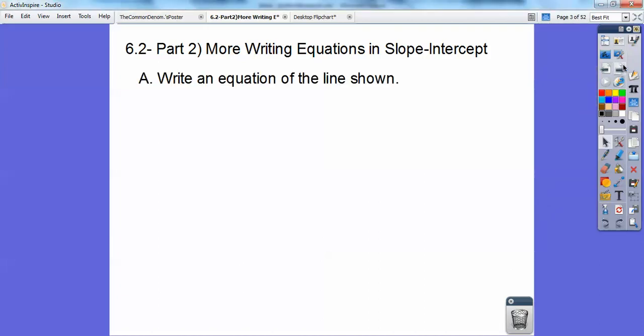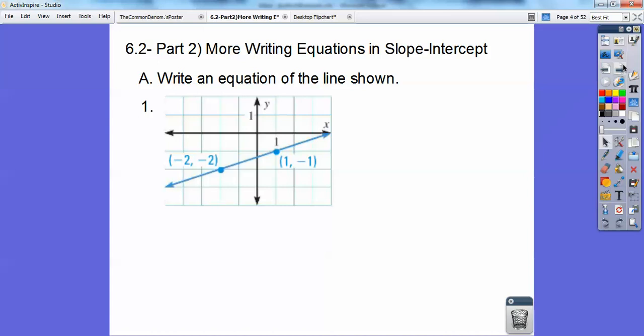I'm going to write an equation of the line shown. Here's this line right here going through those two points. I'm going to do it two ways to find the slope. The first way is I'm going to use the slope formula, y sub 2 minus y sub 1 over x sub 2 minus x sub 1.